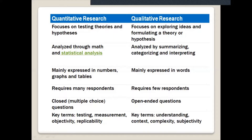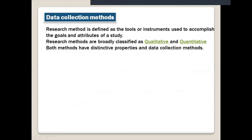Now, data collection methods. A research method is defined as a tool or instrument used to accomplish the goals of a study - it is an application, an instrument, a way through which you attain your objectives or study goals. Research methods are broadly classified as quantitative and qualitative. Both methods have distinct properties and data collection methods; they are quite different from each other even in how data is collected.